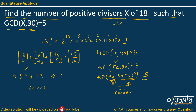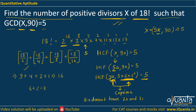For the HCF to be only 5, this a attached to the 5 and the 2 × 3² must be co-prime — meaning a must have no 2's and no 3's in it. Otherwise, if more 2's and 3's come in common, the HCF would be greater than 5.